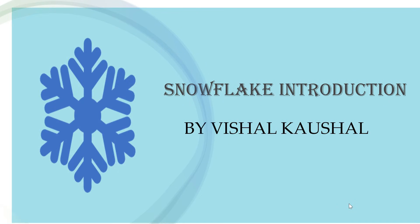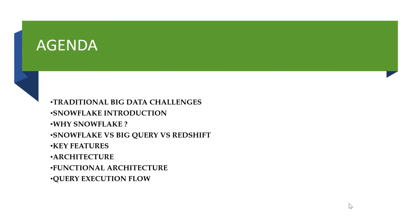In the early days of data management, organizations primarily focused on traditional databases to store and manage data, but that data was relatively small in volume and structured. In this modern era, where the internet is everywhere and data is the new oil, data is rapidly increasing and coming in semi-structured formats too. Organizations started facing challenges such as data silos, where information was trapped in different systems, making it difficult to gain a holistic view of operations. This led to the development of data warehouses — a central repository to pull data from heterogeneous sources.